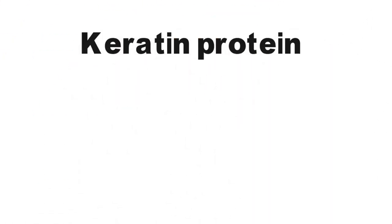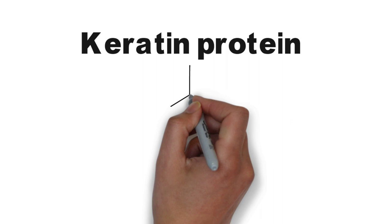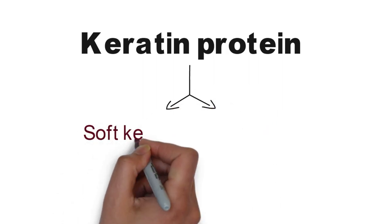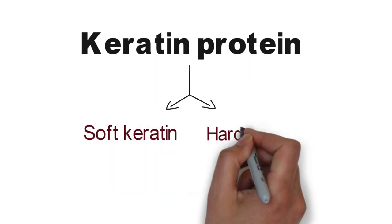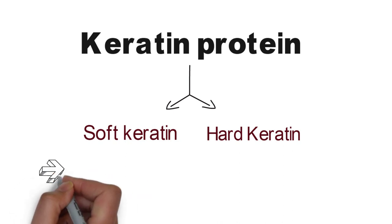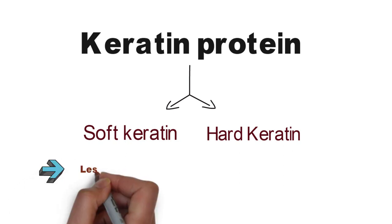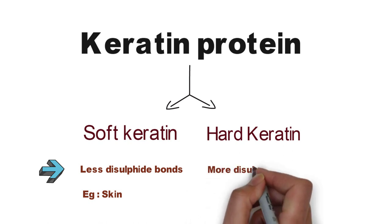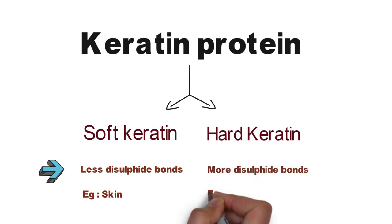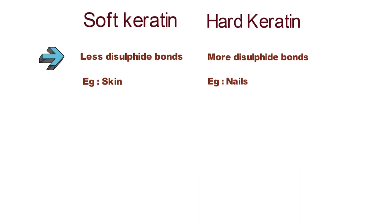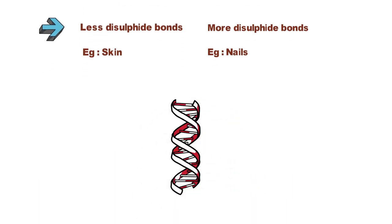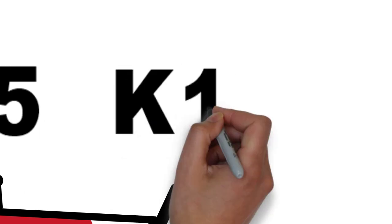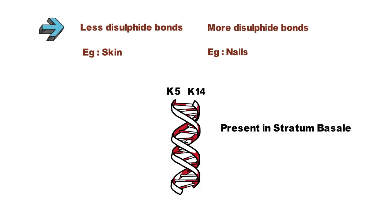There is keratin protein, which is divided into two types: soft keratin and hard keratin. Soft keratin has fewer disulfide bonds — for example, skin. Hard keratin has more disulfide bonds — for example, nails. Keratin 5 and keratin 14 are present in stratum basale, which is the lowermost layer of epidermis.